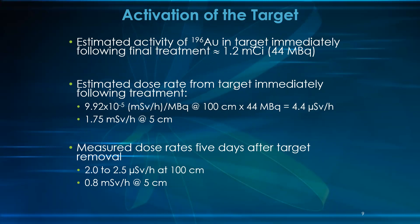The estimated activity of the gold target immediately following the final treatment is 1.2 millicurie. The estimated dose rate from the target immediately following treatment is around 4.5 microsievert per hour at 5 cm. After five days of target removal, the dose rate is around 2 to 2.5 microsievert per hour at 100 cm, and 0.8 millicurie per hour at 5 cm.